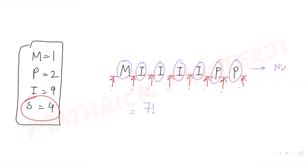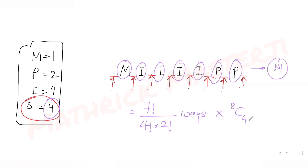The 7 non-S letters can be arranged in 7! / (4! × 2!) ways — dividing by 4! because I repeats 4 times, and by 2! because P repeats 2 times. Then from the 8 available gap positions, I choose any 4 to place the four S's, which gives 8C4 ways. Placing those 4 S's gives 4! arrangements, divided by 4! since S repeats 4 times.